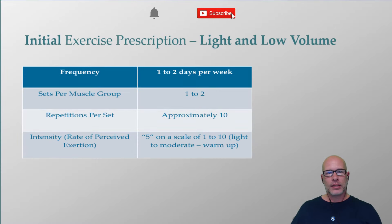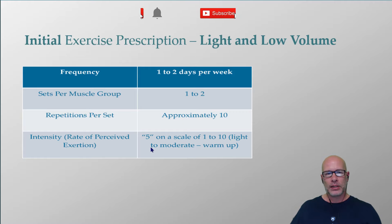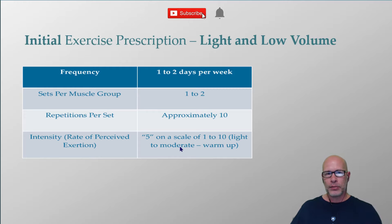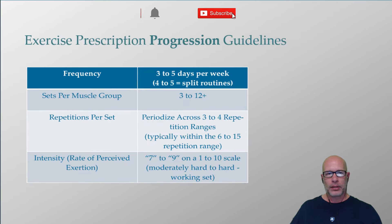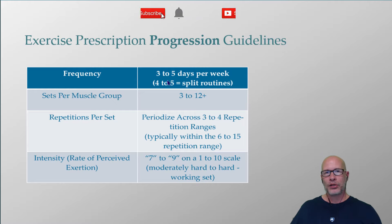These last two slides show that with everyone we want to start with light intensity and low volume — frequency is low, sets per muscle group is only one to two, repetitions per set is approximately 10, and during the familiarization phase I don't want the velocity of movement to slow. I keep them at about a 5 on the RPE scale to make sure their body is responding well within their comfort zone. Progression guidelines get murky because time and desire determine frequency — some people have much more time and desire to train more days per week than others.